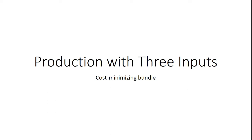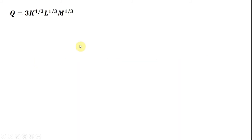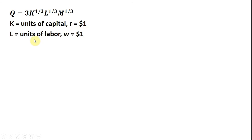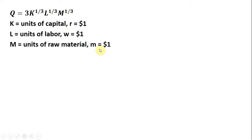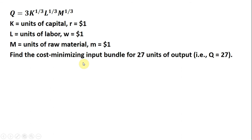Hello, we're going to look at the cost-minimizing input bundle for a production process with three inputs. Here's our production function — it is a function of three inputs. K represents units of capital with a price of one dollar per unit (the rental rate), L is units of labor with a wage equal to one dollar, and M represents units of raw material with a cost of one dollar as well. Our goal is to find the cost-minimizing input bundle for 27 units of output.